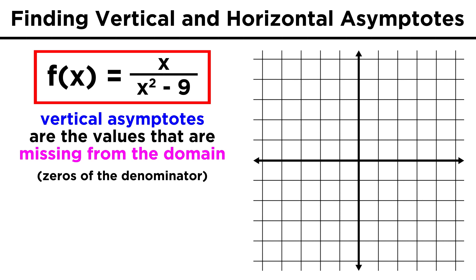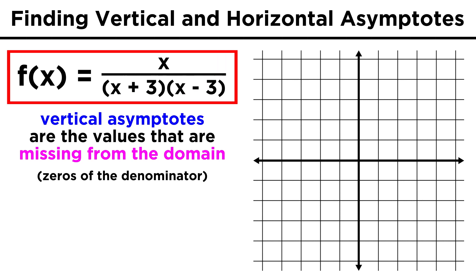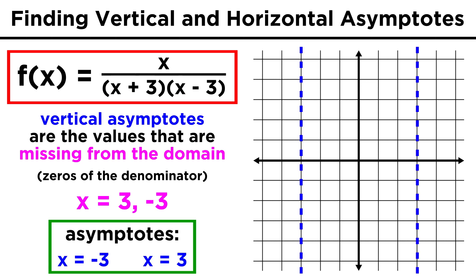Take something like x over x squared minus nine. We know that this denominator can be factored to get x plus three times x minus three, and that means that three and negative three are the two zeros of the denominator. Since those values are not in the domain of the function, we must have vertical asymptotes at x equals negative three and x equals three.